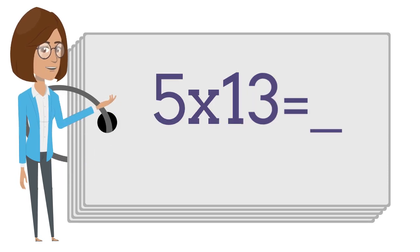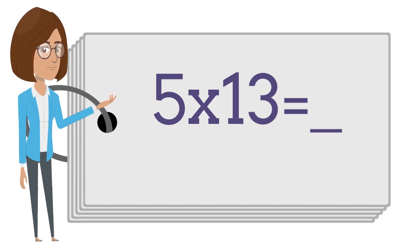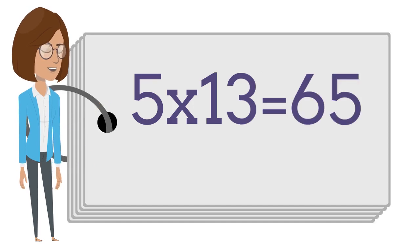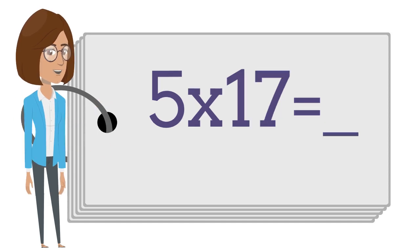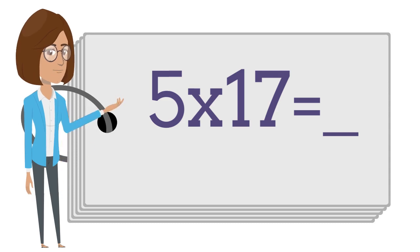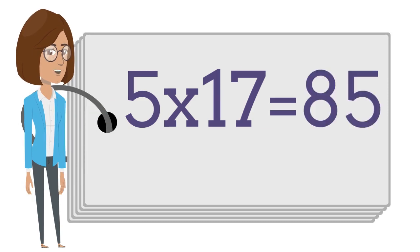Five times thirteen is? Say the answer out loud. Five times thirteen is sixty-five. Five times seventeen is? Say the answer out loud. Five times seventeen is eighty-five.